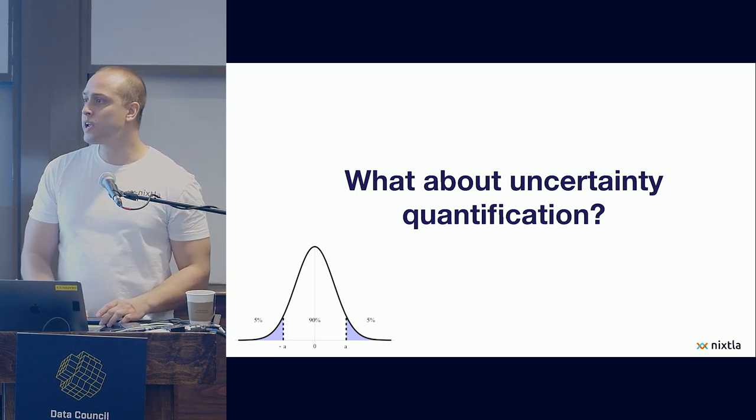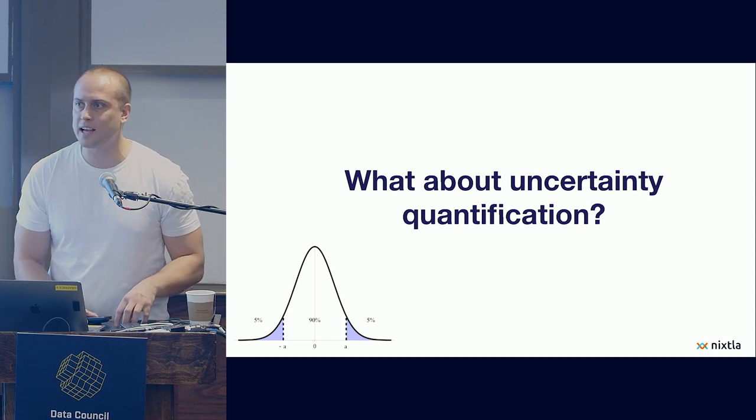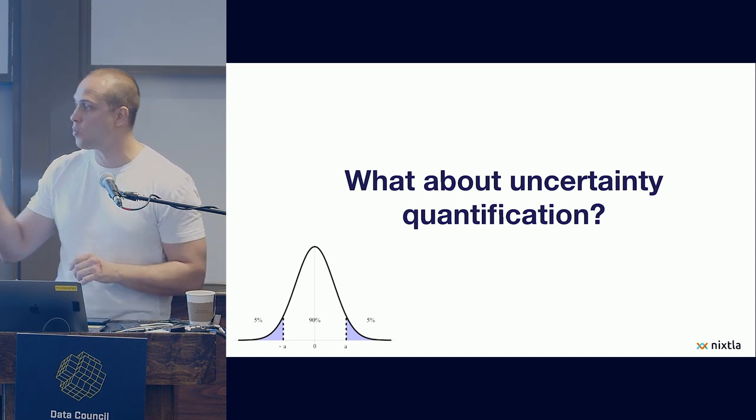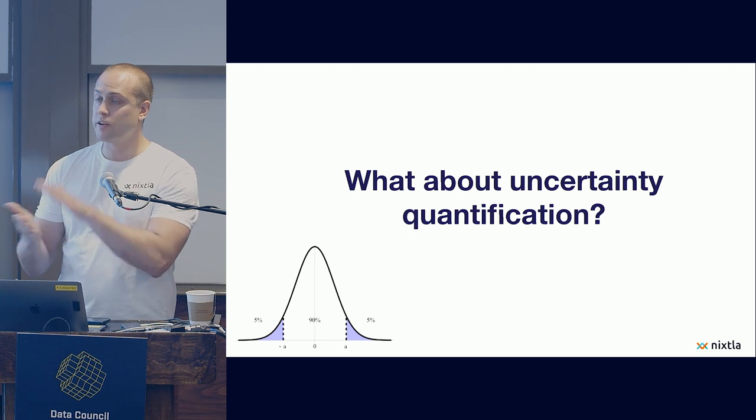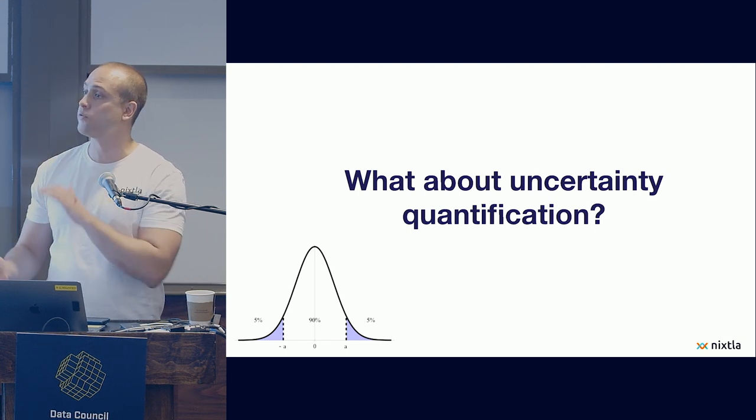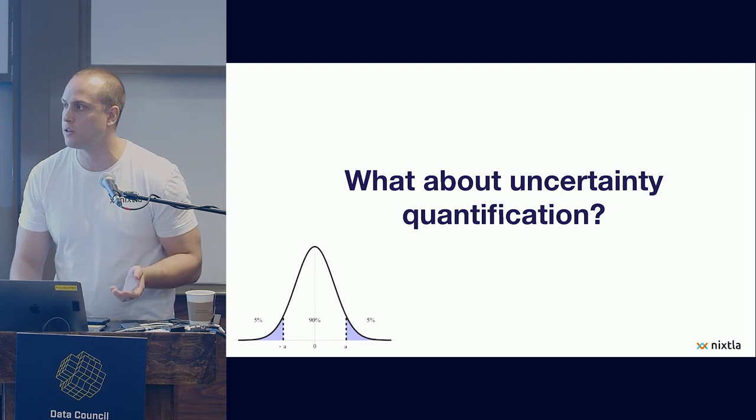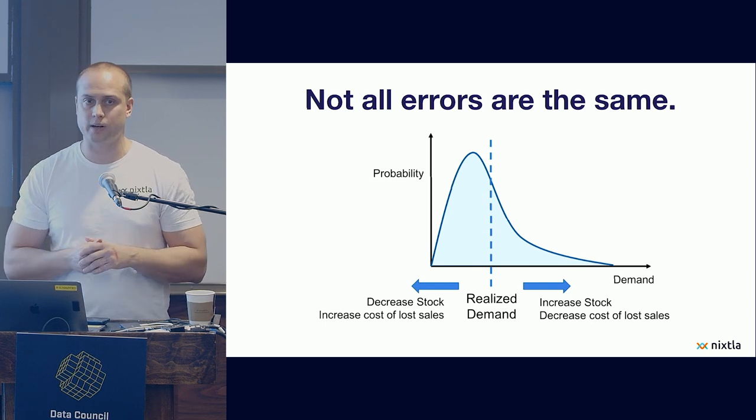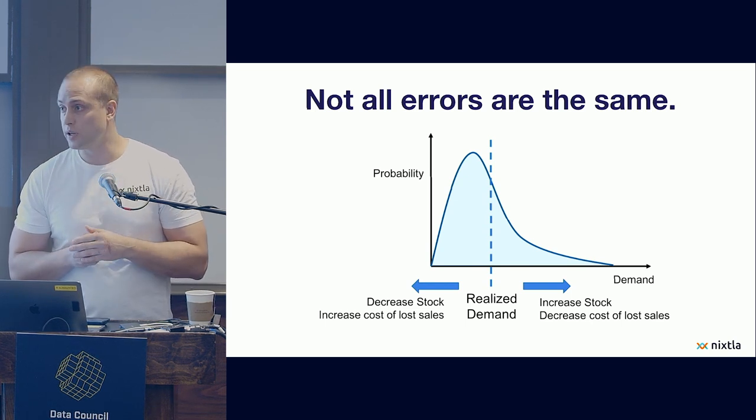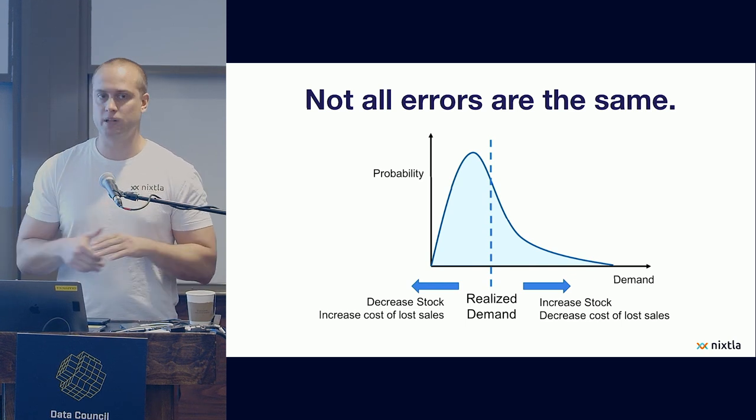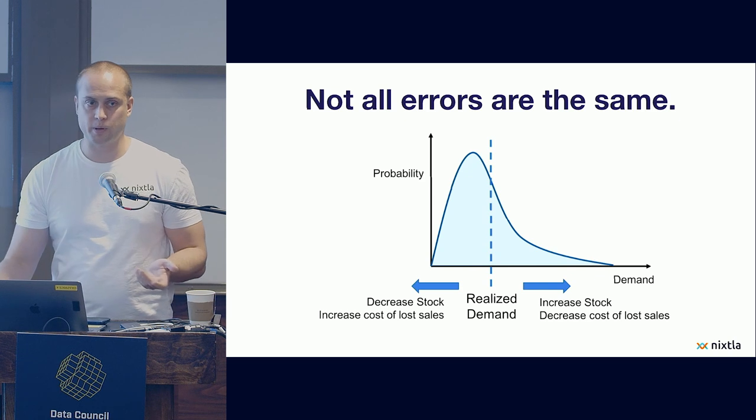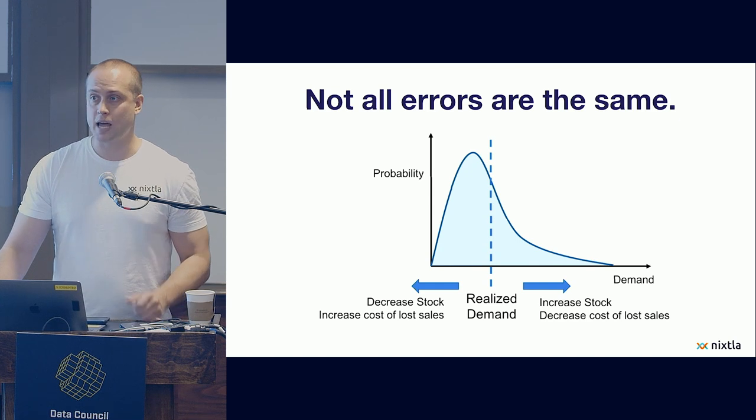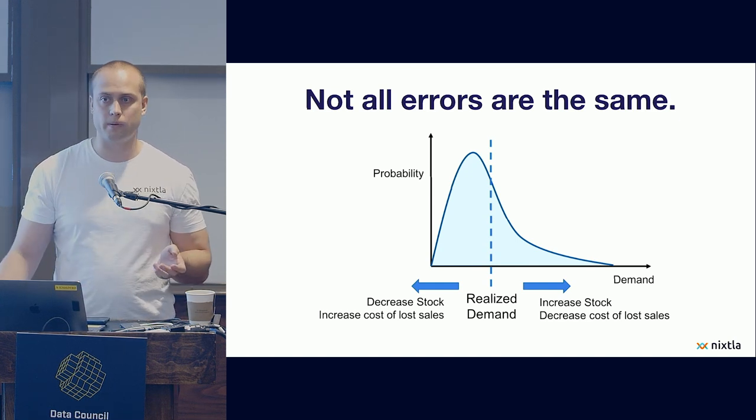But now, we encounter a problem, namely, that forecasting tasks are really more often than not probabilistic problems. You are not that interested in just finding one point in the future. You are rather interested in trying to understand the possible distribution of future values to take decisions on their uncertainty. And this is important because normally, errors are not distributed evenly in the sense that it's probably worse if you are a little bit below the actual value than if you are a little bit above.